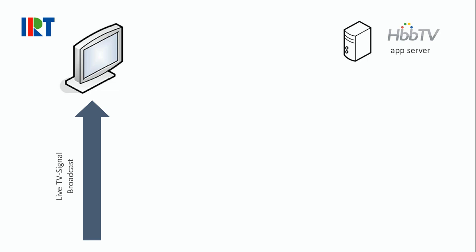In the context of conventional broadcast systems, HbbTV applications are regularly launched like this. The so-called Application Information Table, in short the AIT, is inserted into the broadcast stream.